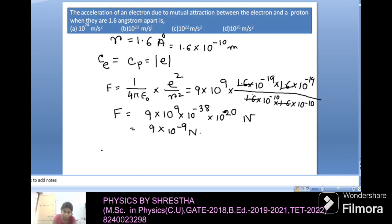We have to find the acceleration. From Newtonian mechanics we know acceleration equals to force divided by its mass. That means 9 multiplied by 10 to the power minus 9 divided by mass of 1 electron is 9.1 multiplied by 10 to the power minus 31 kg.